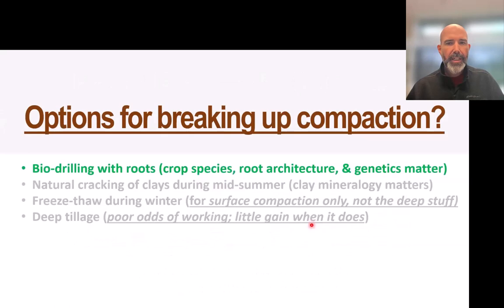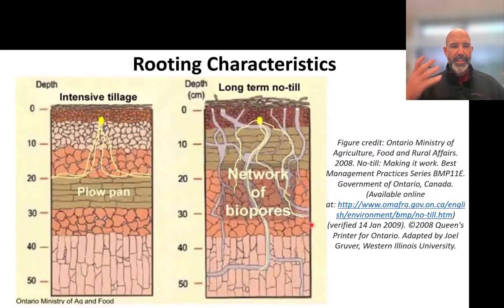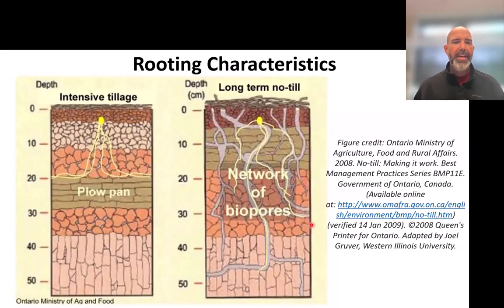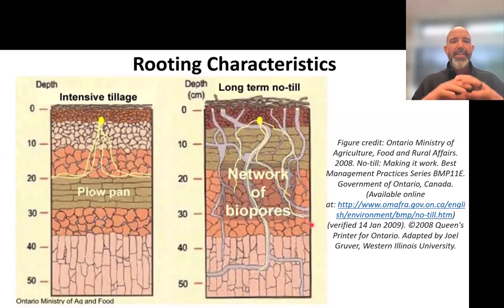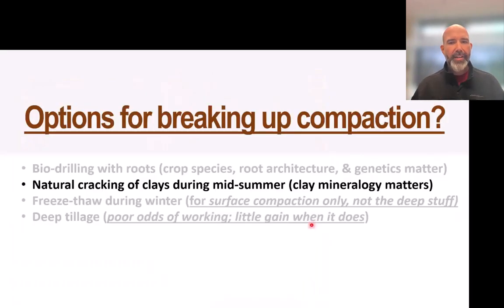What are the options for breaking up compaction? One is bio-drilling with roots — getting in crops whose roots can break through compaction layers. However, it's a multi-year effort. Roots must form new root channels, then those roots have to decompose to open the channels for subsequent cash crops. It usually takes several years before becoming effective.